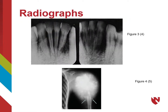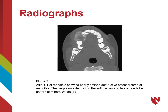Here are a couple of radiographs showing typical features often seen for osteosarcoma. In the bottom image, you can see the typical sunburst pattern affecting the patient's shoulder. Here is another radiograph — an axial CT scan of the mandible — showing poorly defined destructive osteosarcoma of the mandible. This lesion extends into the soft tissues and has a cloud-like pattern of mineralization.